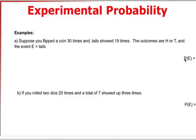Okay, so now if we take a look at a couple questions here, suppose you flipped a coin thirty times, and tails showed up nineteen times. The outcomes are either heads or tails, and the event is tails. So the probability of getting tails, or the experimental probability of getting tails, is going to be nineteen over thirty, because nineteen times tails showed up out of thirty trials.